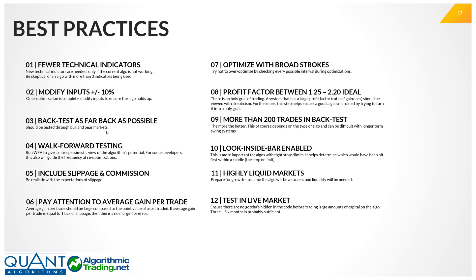The third best practice is to backtest as far back as possible. You want to test through bull and bear markets — the more data, the better. There can be a temptation to only backtest through periods favorable to the algorithm. For example, a momentum long algorithm backtested only from 2009 would skip 2007 and 2008, when the market was in a rough bear market. You might rationalize that you'll only trade in bull markets, but the problem is you don't know you're in a bull market until it's already happened.